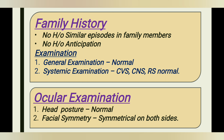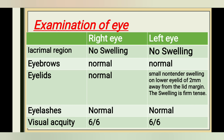General examination: normal. Systemic examination: normal. Head posture: normal. Facial symmetry: symmetrical on both sides. On examination of the eye, lacrimal region is normal with no swelling in both eyes. Eyebrows are normal on both eyes. Eyelids — right eye normal; left eye shows a small, non-tender swelling on the lower eyelid, 2 mm away from the lid margin, and the swelling is firm and tense.